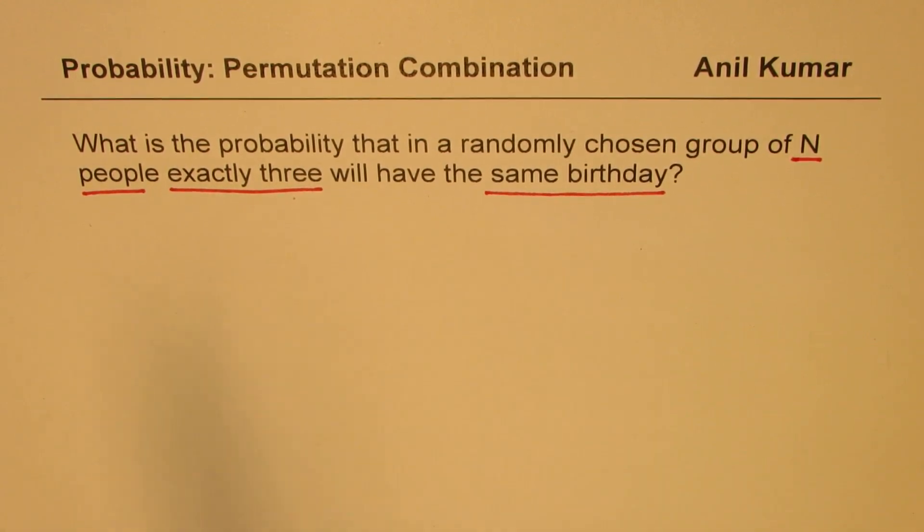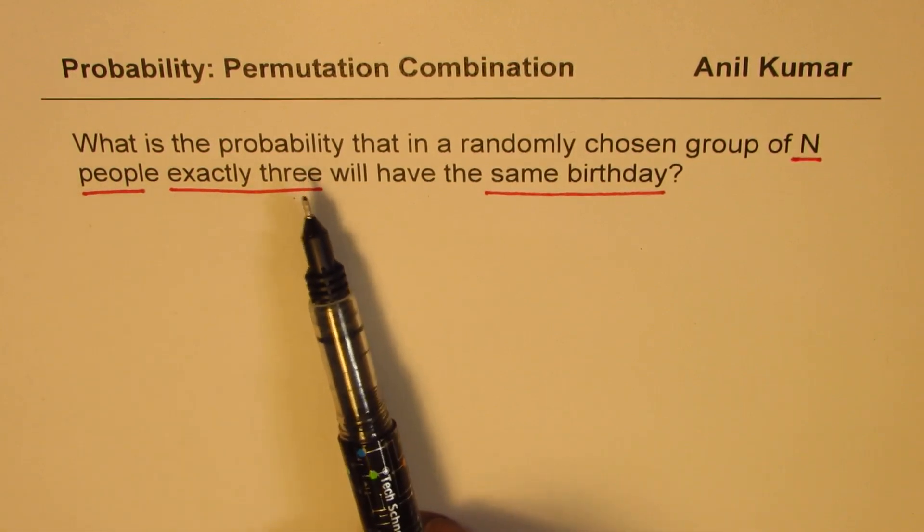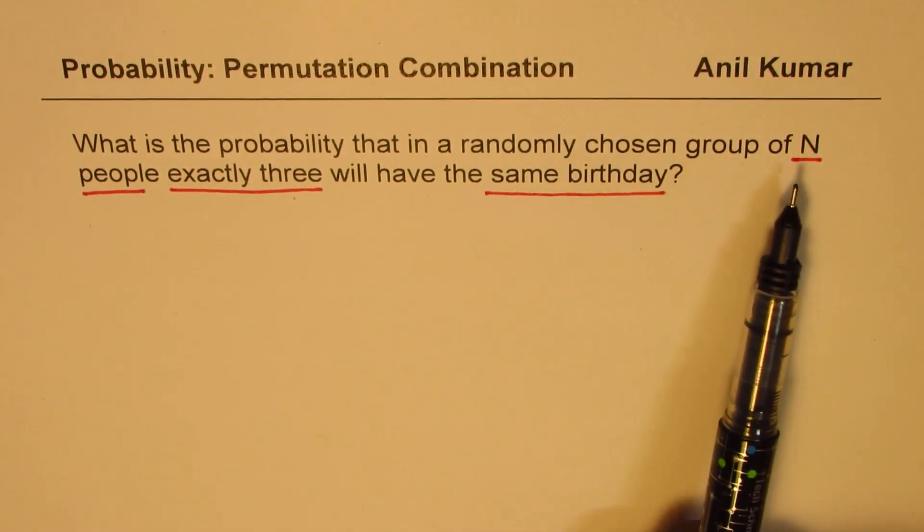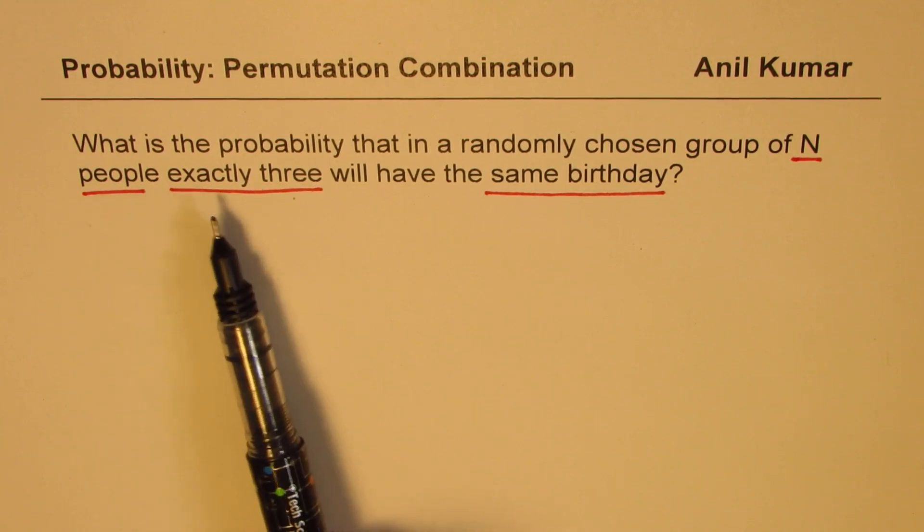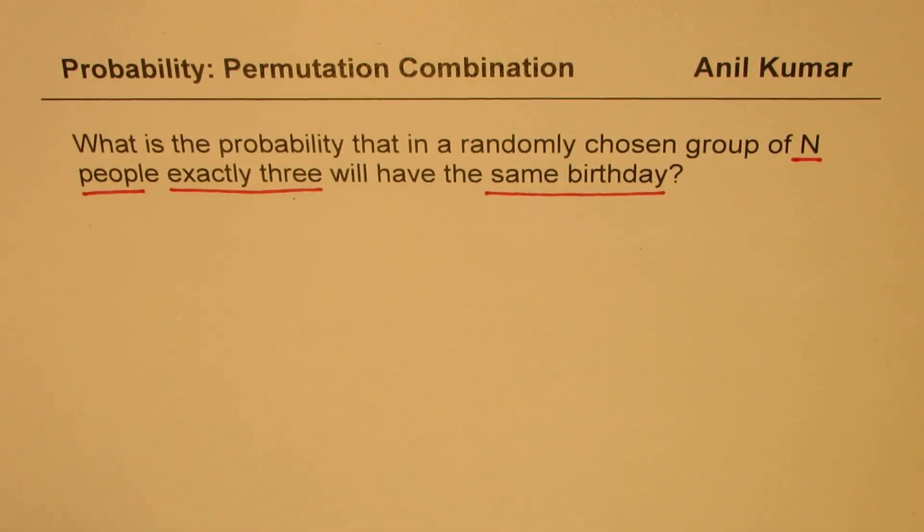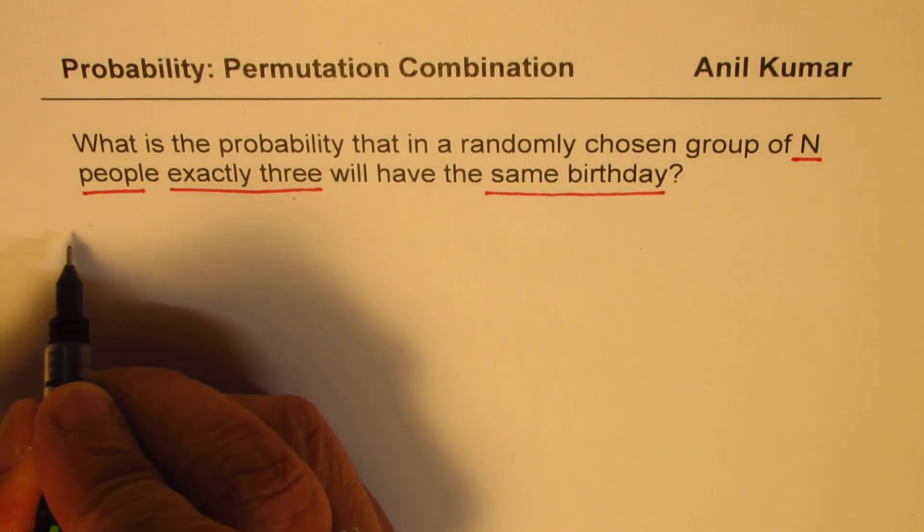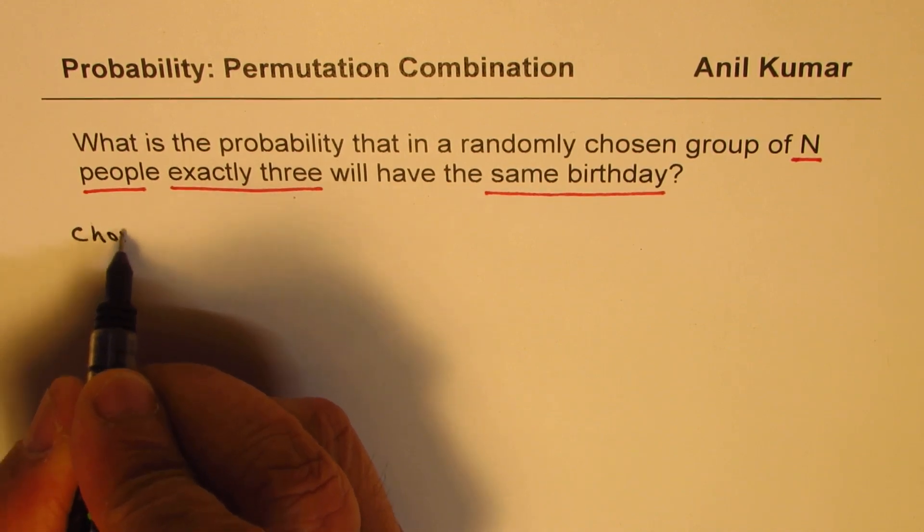Let's try to understand. What is the probability that in a randomly chosen group of n people, exactly three have the same birthday? So here, first thing is to make a choice of three persons.